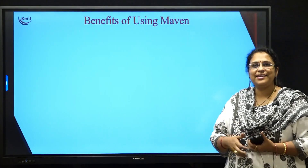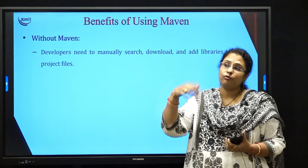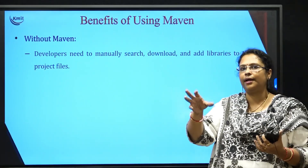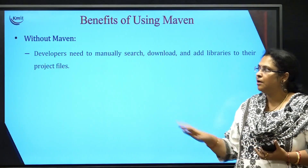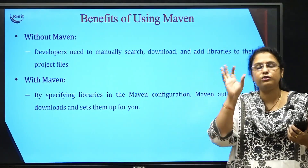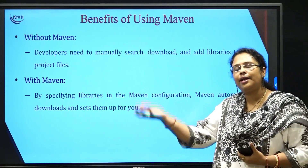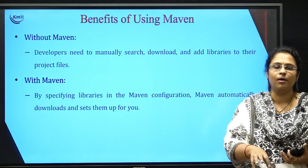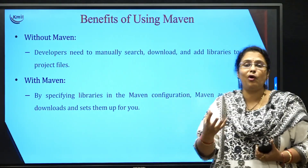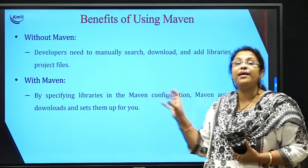Without Maven, say suppose I want a library for my particular project — I have to manually search for that library, download it, then open my project and add that library. But with Maven, you just need to specify which library you want. It automatically searches for it, downloads it, adds that library to your project, then compiles, tests, and packages it into a deployable executable code — everything done automatically with the help of Maven build tool.